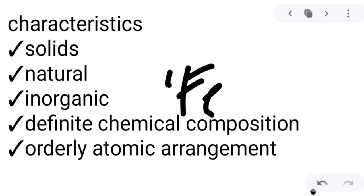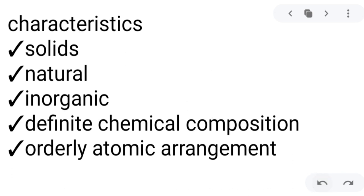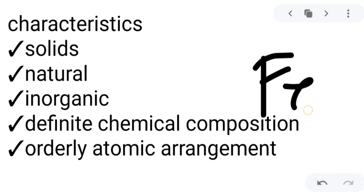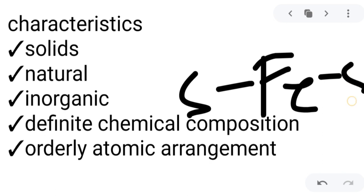The fifth characteristic is that the atoms of minerals must have an orderly atomic arrangement, which can be denoted by the presence of a crystal. A crystal of a mineral is the outward sign of this orderly atomic arrangement, meaning they must have a definite structure in terms of their crystals. For example, pyrite has one iron and two sulfur in that specific arrangement.